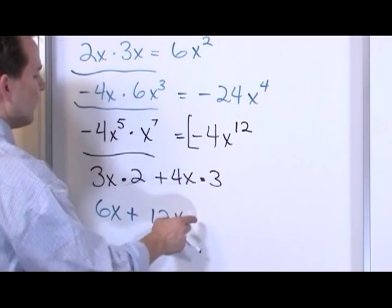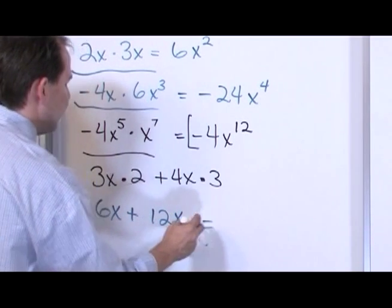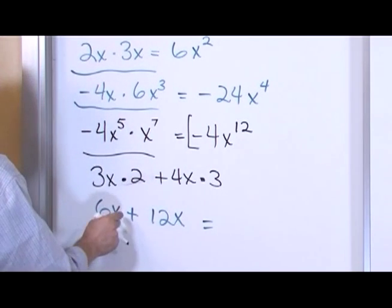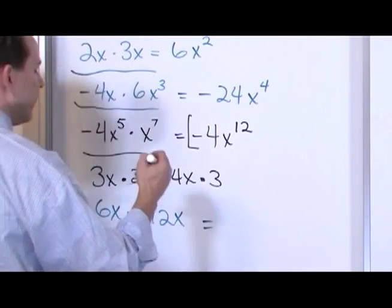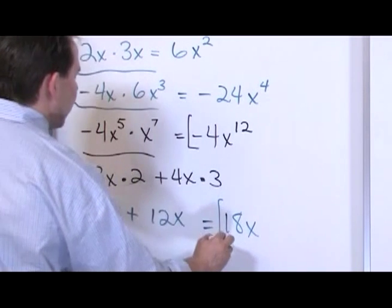Here you have 4x times 3, giving us 12x. Now, we have two like terms here. The x's are the same, so this is like terms. We can collect them. 6 plus 12 is 18. 18 what? 18x.